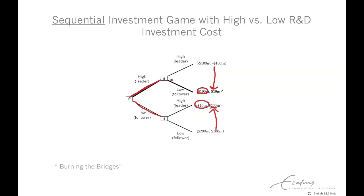Firm S then has no other option but to follow the low effort strategy, with an equilibrium payoff of 110. So by changing the game from a simultaneous to a sequential move game, firm P can use its timing to its advantage and change the equilibrium outcome of the game.